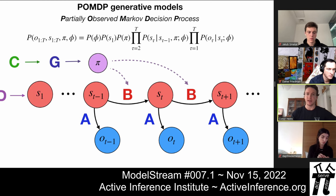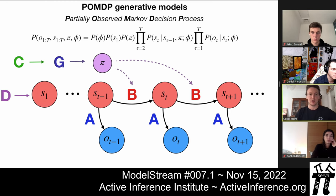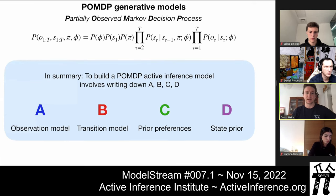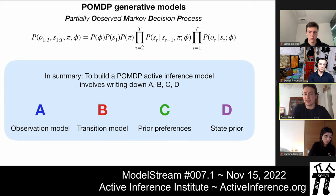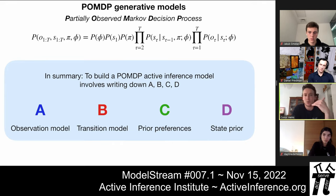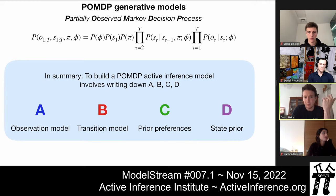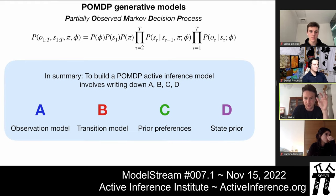In summary, to build a POMDP active inference model you have to write down and encode the A, B, C, and D arrays. There's also a prior over policies called an E vector. The heavy lifting of active inference consists in writing these things down — actually encoding what your agent believes about the world it exists in. In the case of categorical discrete distributions, these end up looking like matrices and vectors. Since everything is categorical distributions, you're not dealing with continuous infinite dimensional spaces, but with things that have a discrete number of entries, like a four-by-four or five-by-five matrix.